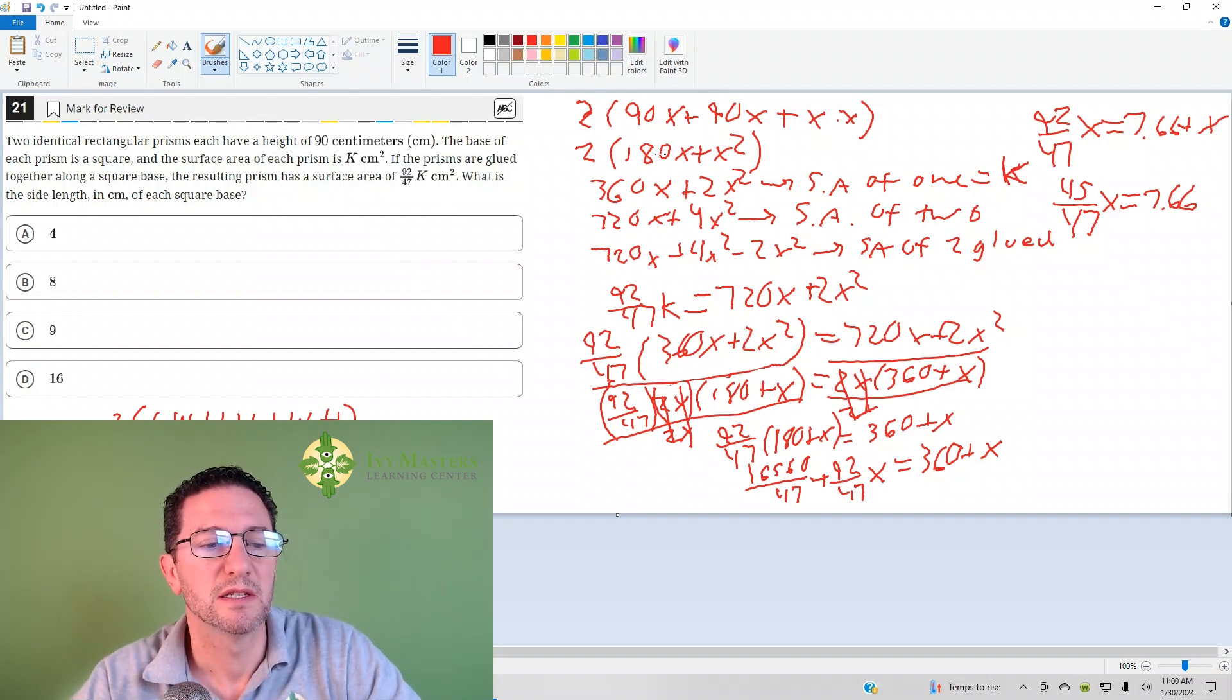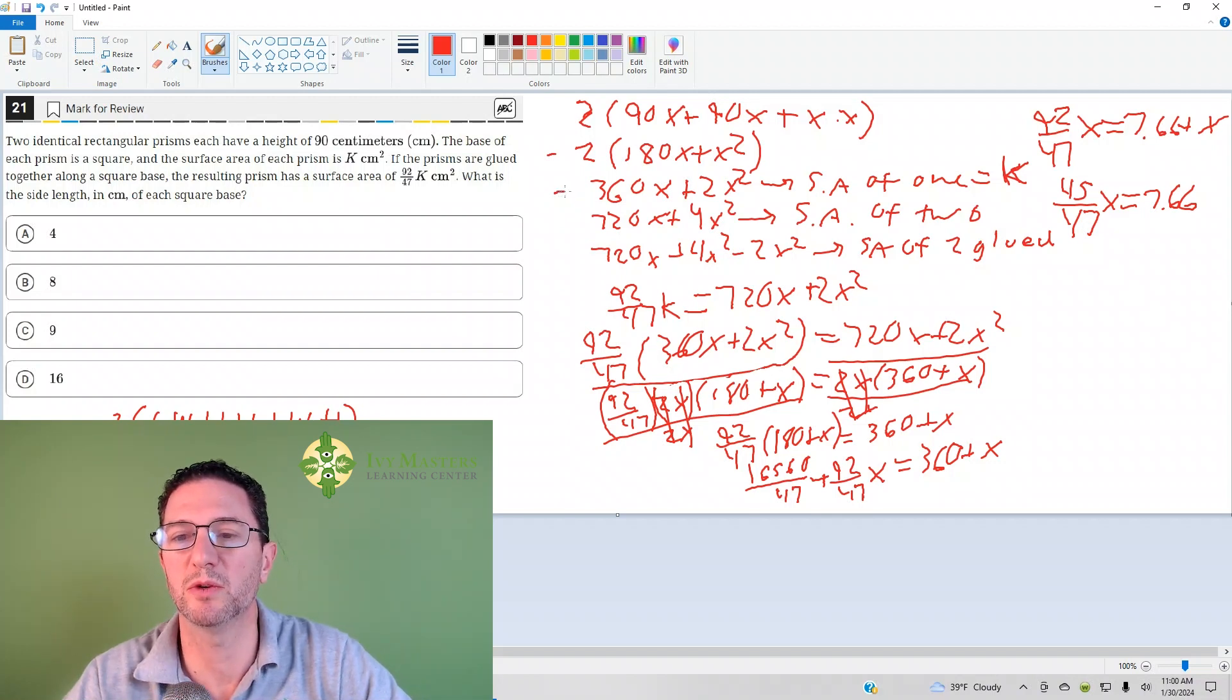If you were to plug in, since both the length and the width are x, it would be 90x plus 90x plus x times x, and then you're going to double that. And once you double that, you get 2 times 180x plus x squared. And then when you distribute the two, you wind up with 360x plus 2x squared, which is the surface area of one side, which we already mentioned is k.